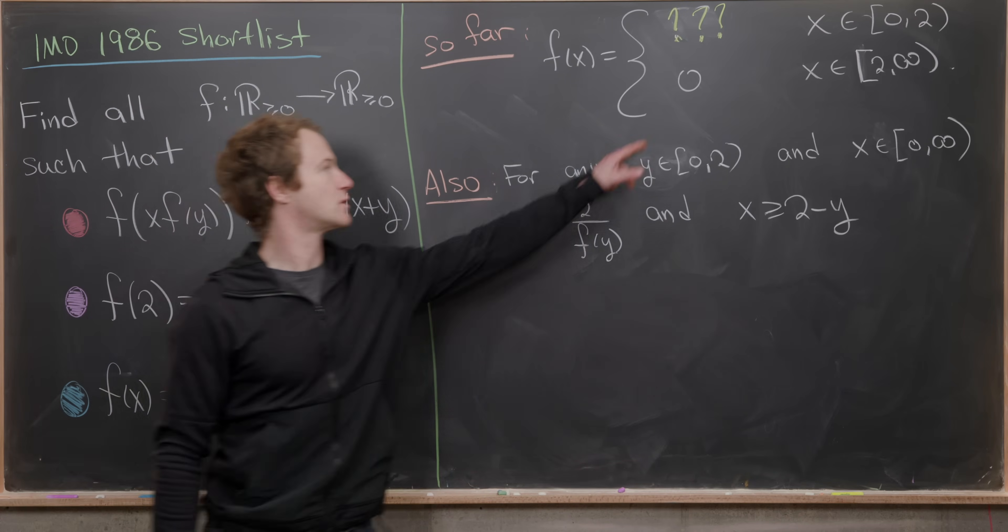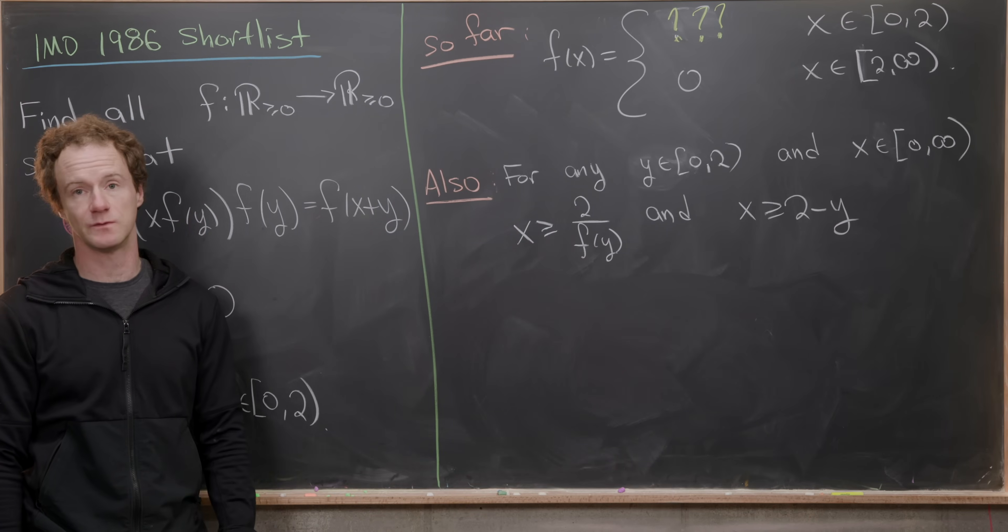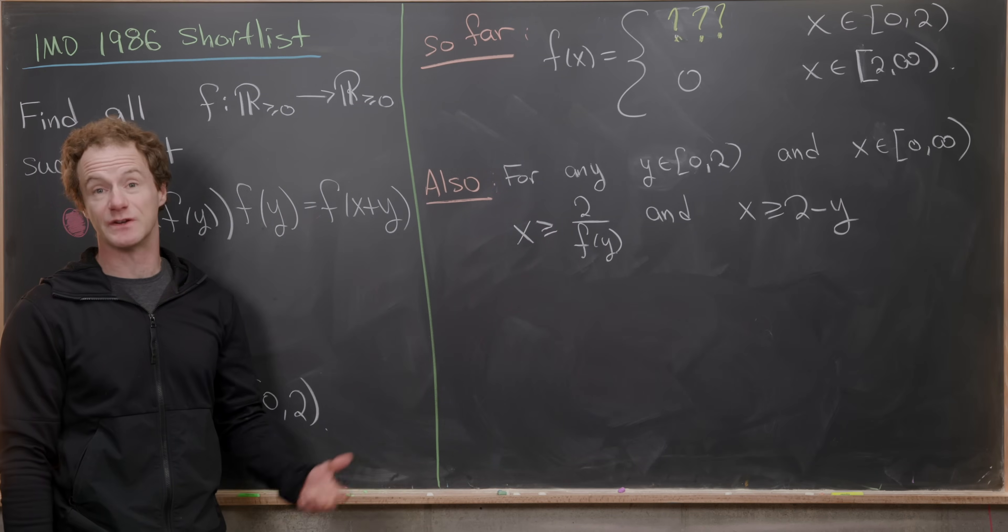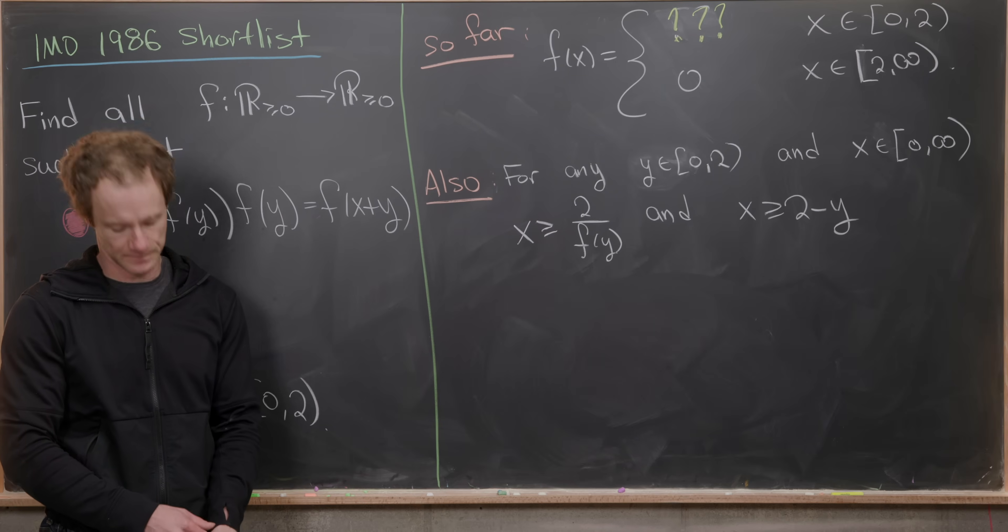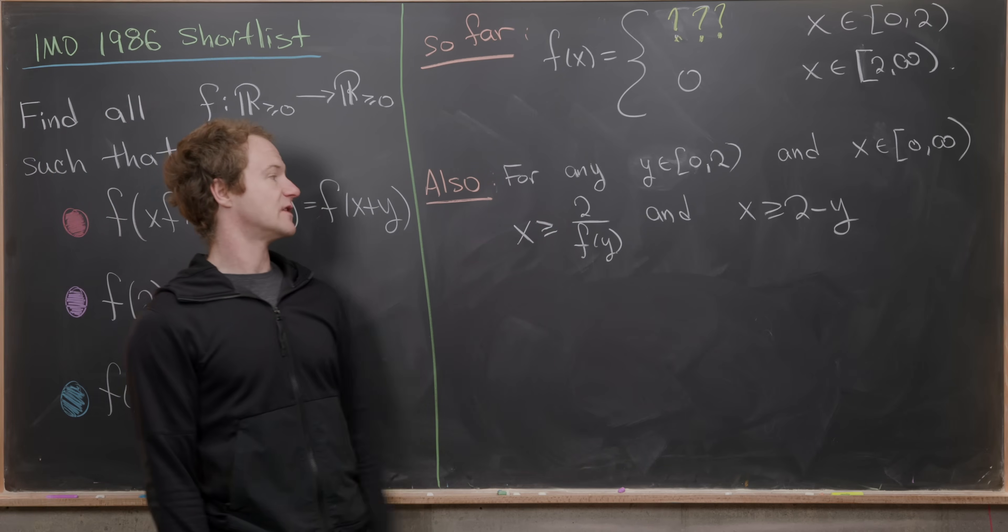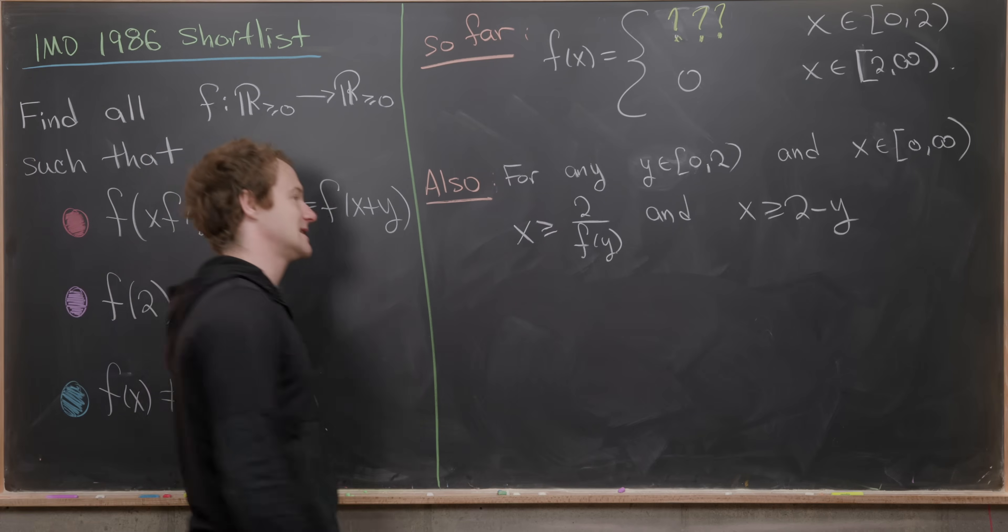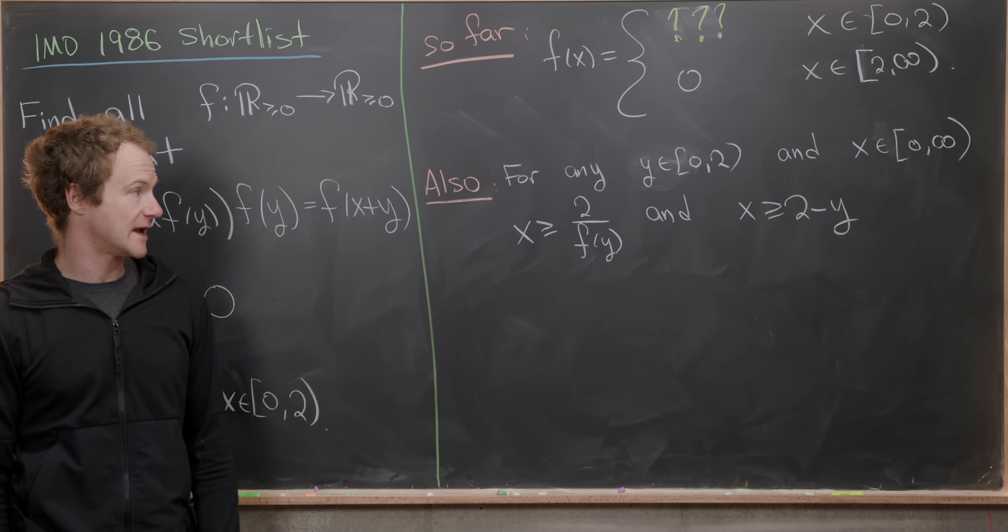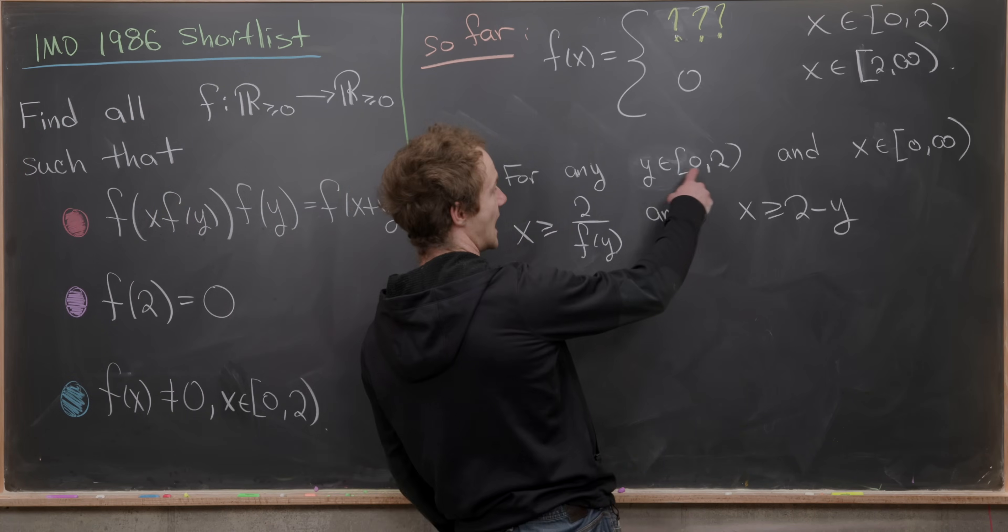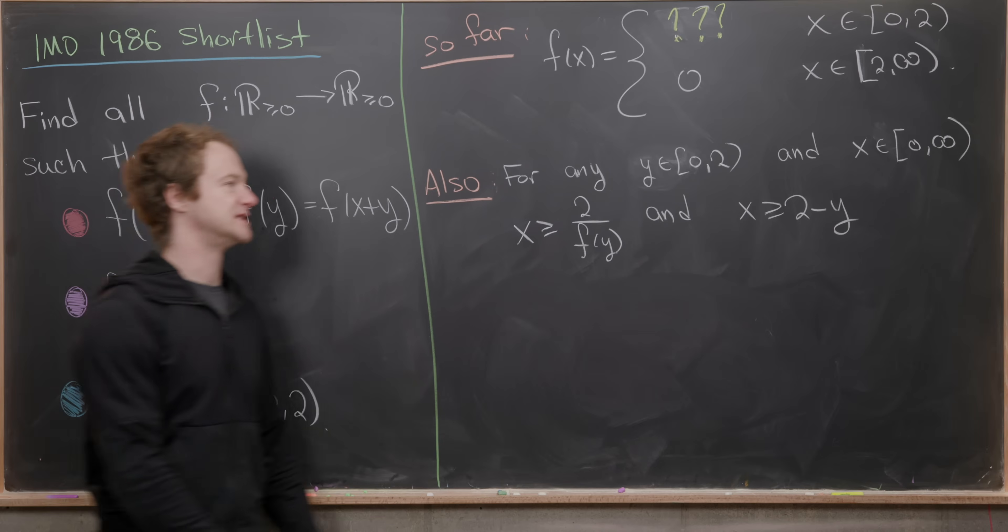So let's see where we are. We surmised that f(x) = 0 if x was on the interval [2,∞). But we really had a big unknown if x was on the interval [0,2). But we had this system of inequalities that was given by x ≥ 2/f(y) and x ≥ 2-y. And these two inequalities held for all y on the interval [0,2) and x on the interval [0,∞).